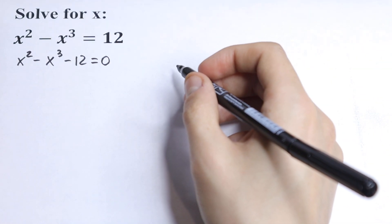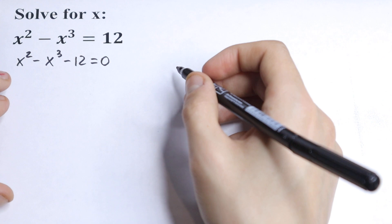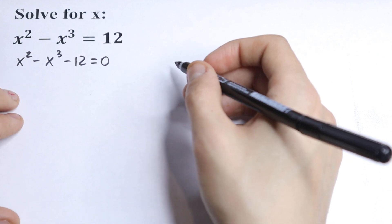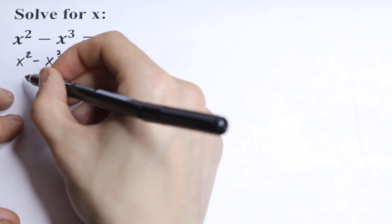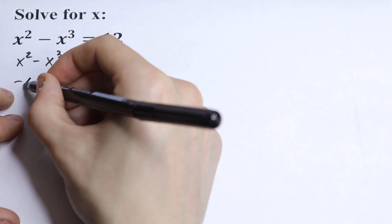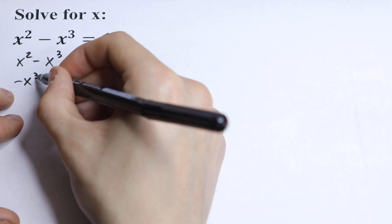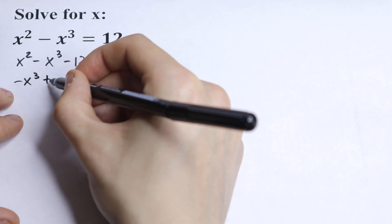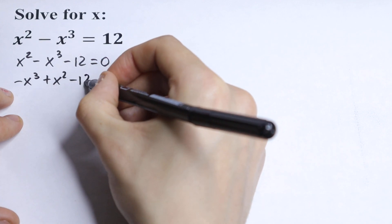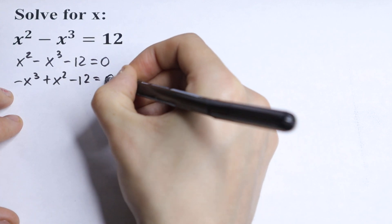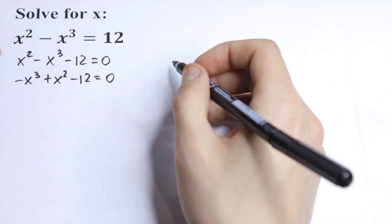Let's change the order a little bit. So we will have minus x cubed plus x squared minus 12 equal to 0.